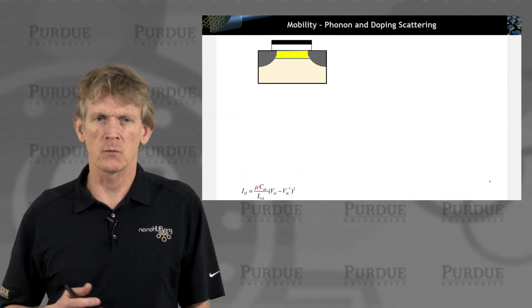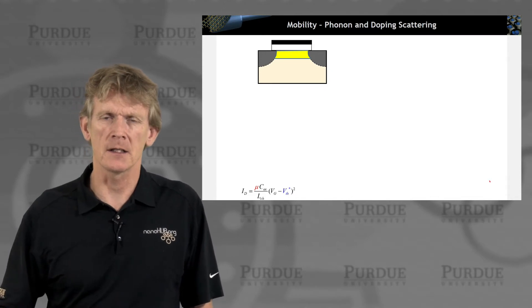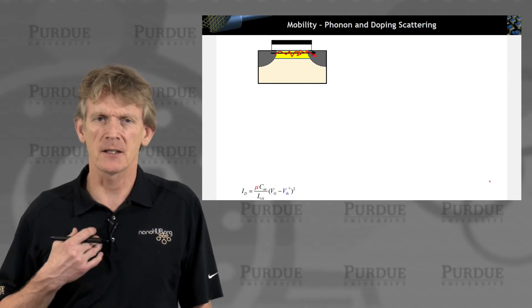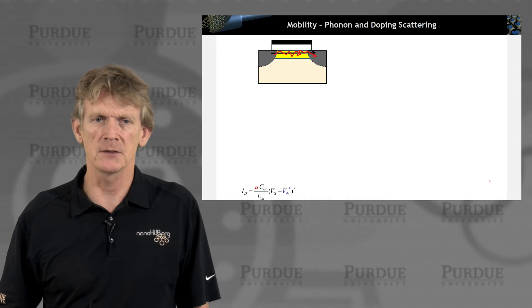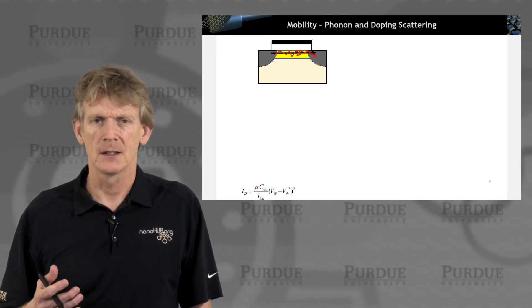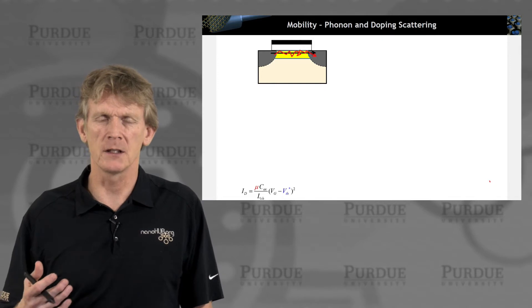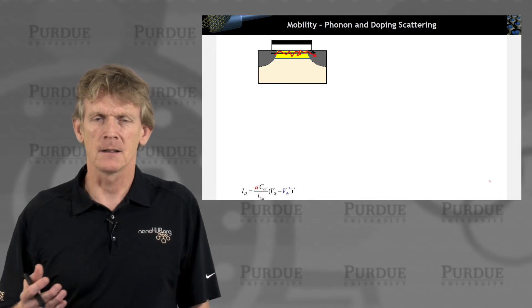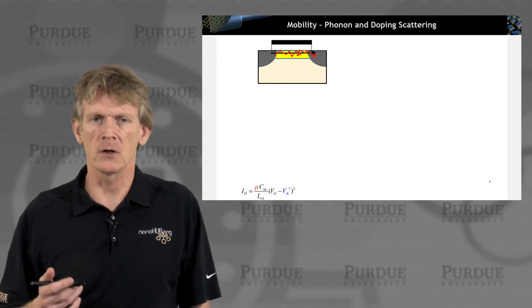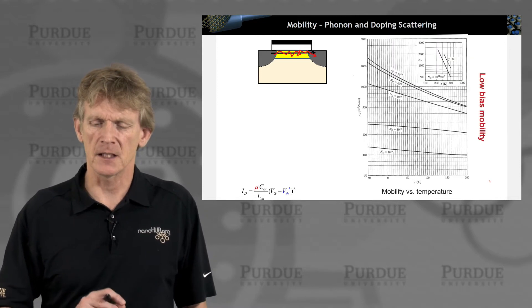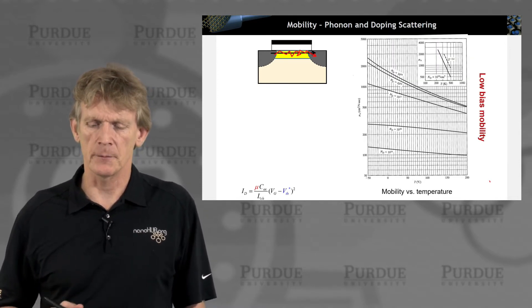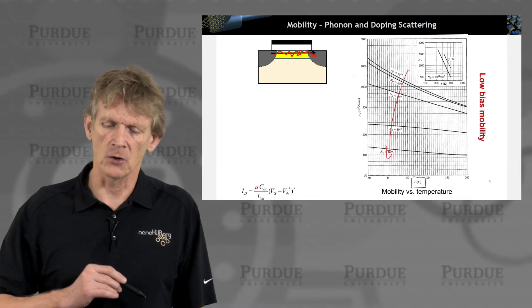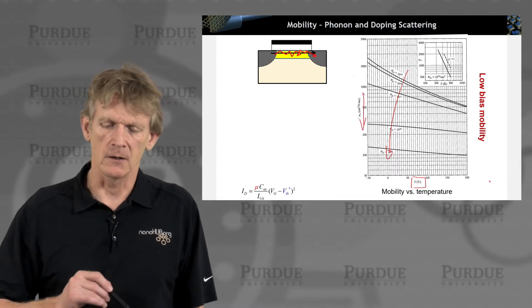Alright, so we had talked way back when in the course about mobility and phonon and doping scattering. So you have electrons in the channel now and they're scattering, they're always scattering. Equilibrium is a very busy place. And we can talk about channels becoming quasi-ballistic, but then you still end up defining something like an equivalent mobility and use these concepts. But for a longer channel device, we had discussed how the mobility depends on temperature. So this was the curve as a function of temperature. And as you increase the doping, the mobility goes down.